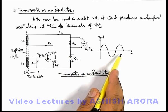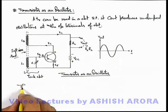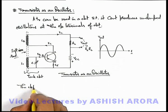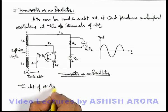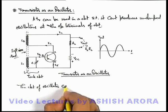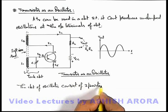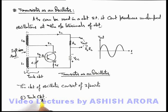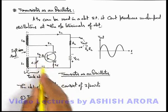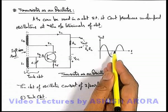In the whole circuit there are three sections. The very first one is the tank circuit, which produces oscillations that are amplified by the transistor, and on the collector side the amplified output is produced.